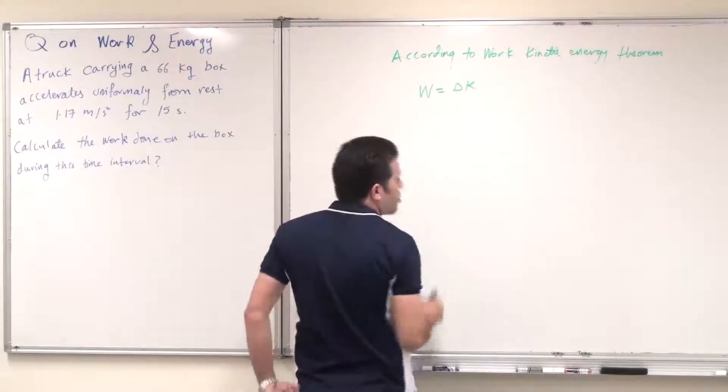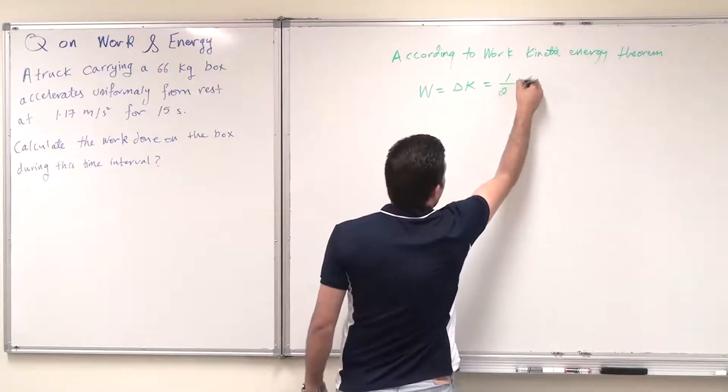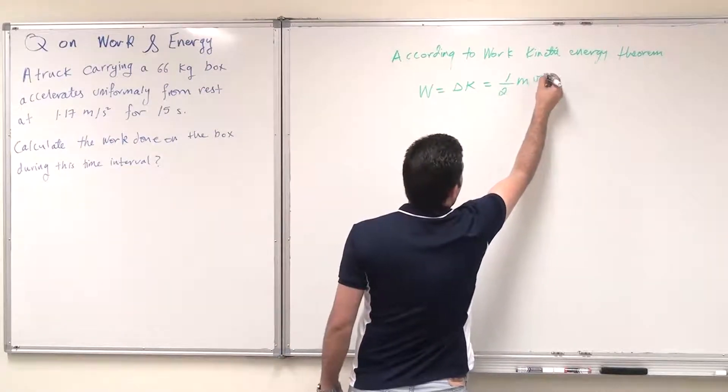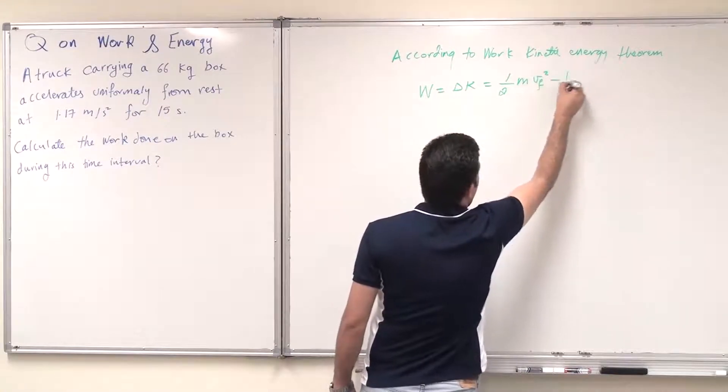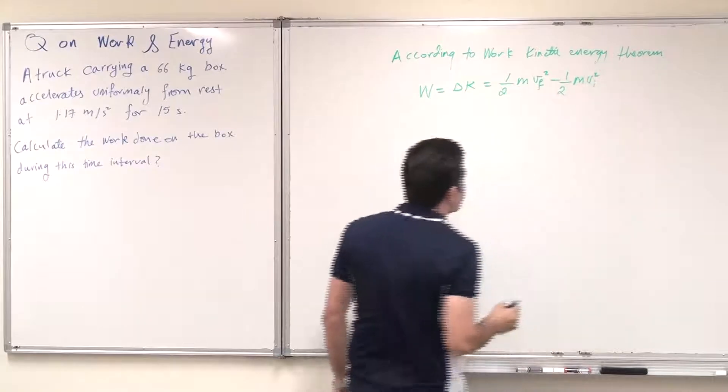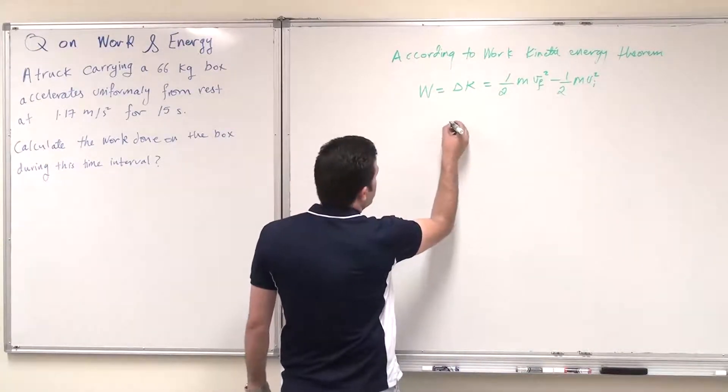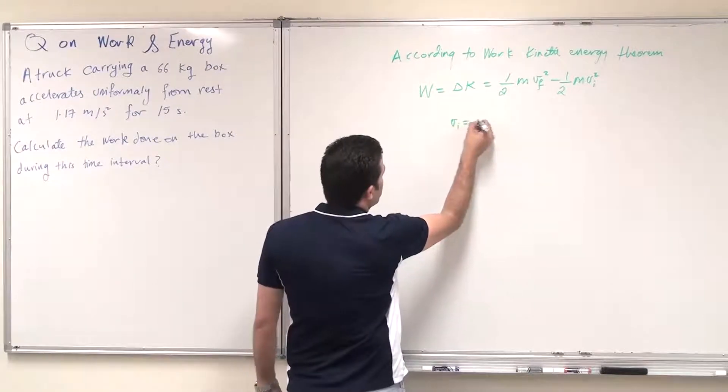which means it is half m v final squared minus half m v initial squared. And since it accelerates from rest, so v initial will equal zero,